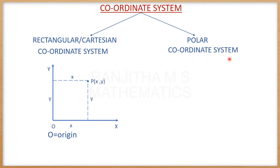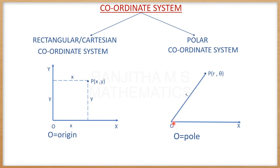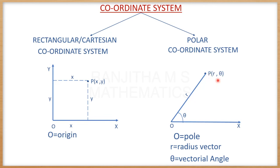In the case of a polar coordinate system, if we consider OX as the initial line, the point O is called a fixed point — we call this fixed point O as the pole. If we consider any point P in the plane, P has coordinates R and theta, where R is the distance from the fixed point O to the point P, called the radius vector. Theta is the angle measured in the positive direction of the X-axis, called the vectorial angle. So P has polar coordinates R and theta.